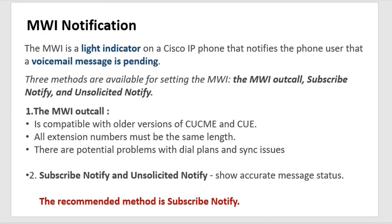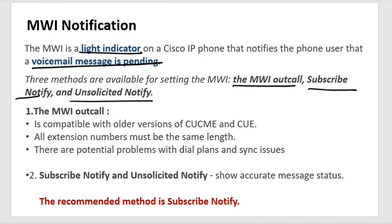MWI notification in Unity Express works similarly to Unity Connection — a light indicator on the phone notifies the user that a voicemail message is pending. There are three types of notifications: out-call, subscribe-notify, and unsolicited-notify. Out-call is compatible with older versions; it is an older method and is no longer used. With out-call, all extension numbers must be of the same length, and there are potential problems with dial plan and dialing issues.